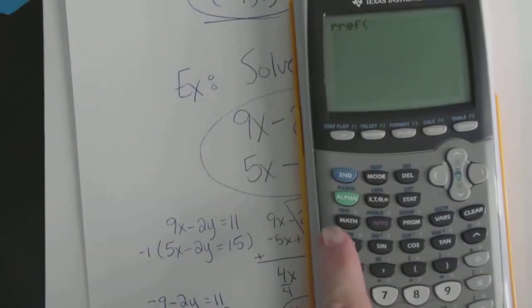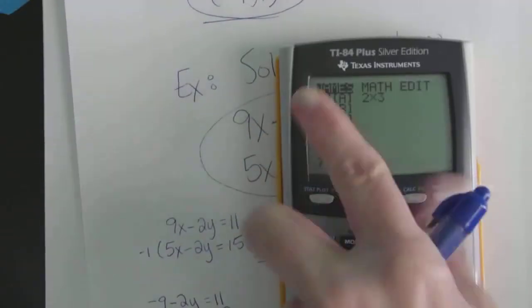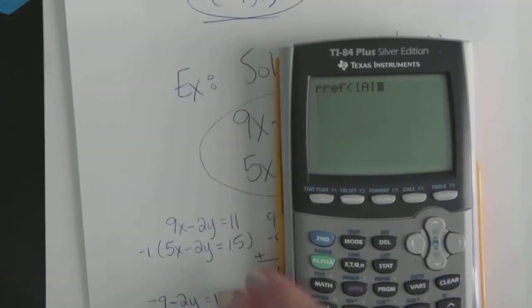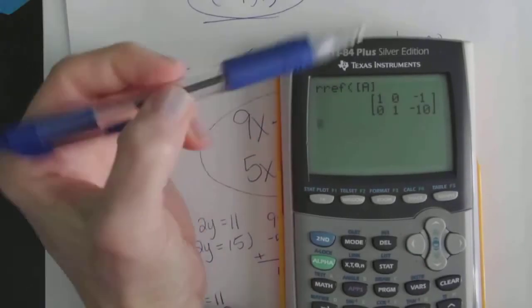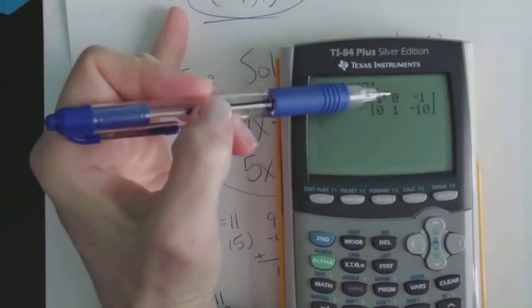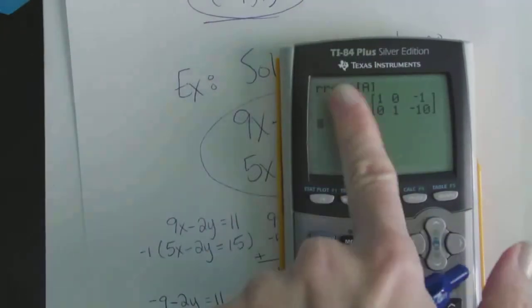You want to see that come up on your screen. But which matrix? Well, matrix A. Now we have to name it. So we go in again. Second matrix. Name it. It's number 1. Enter. There you have it. Enter.